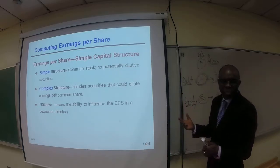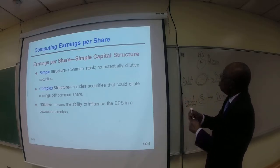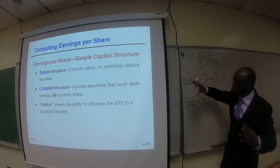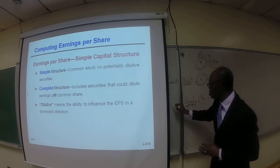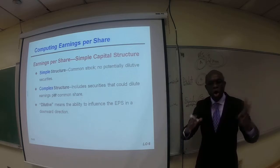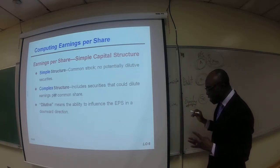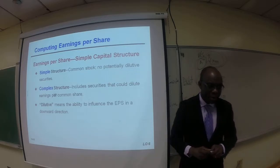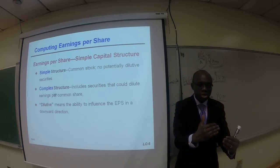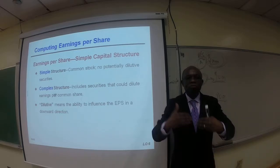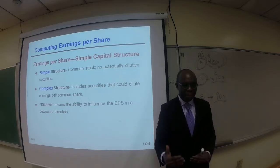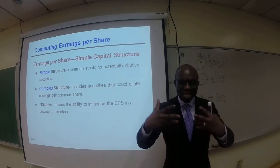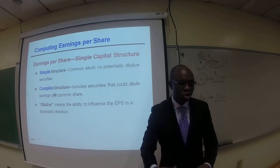What do we mean by capital structure? It simply means how your capital is structured. For example, a company has $100 million in total assets — the question is who has claim to it, the creditors or the owners: debt versus equity. When a company has no potentially dilutive securities, it has a simple capital structure. However, when a company has securities that can be converted into common stock, it has a complex capital structure. Dilutive means having the ability to influence EPS in a downward direction — it dilutes, or decreases, the EPS.